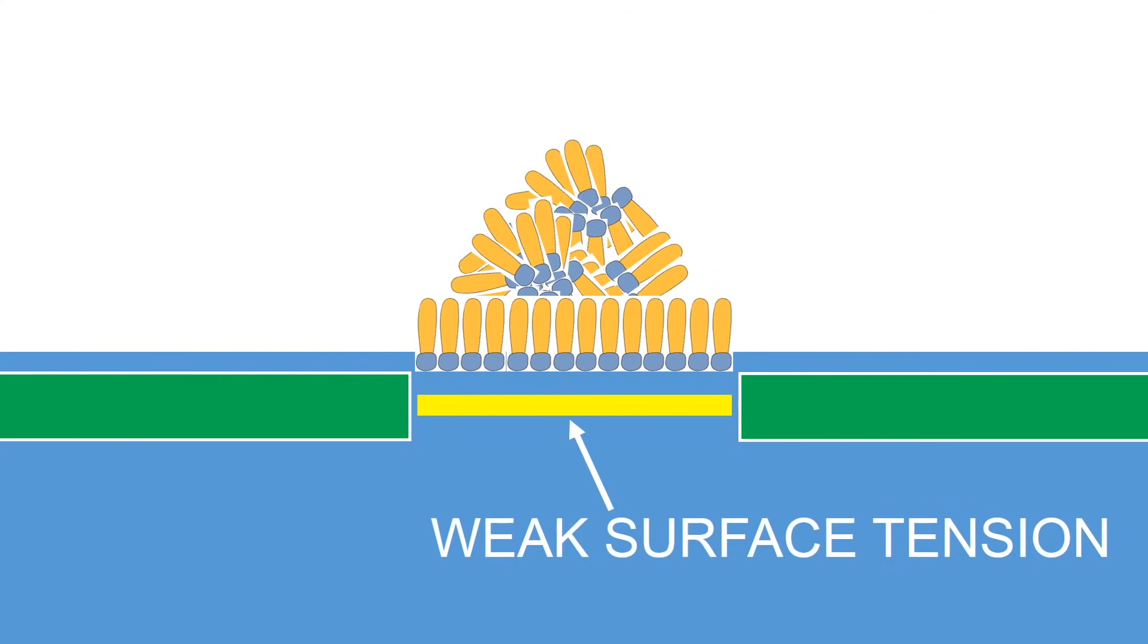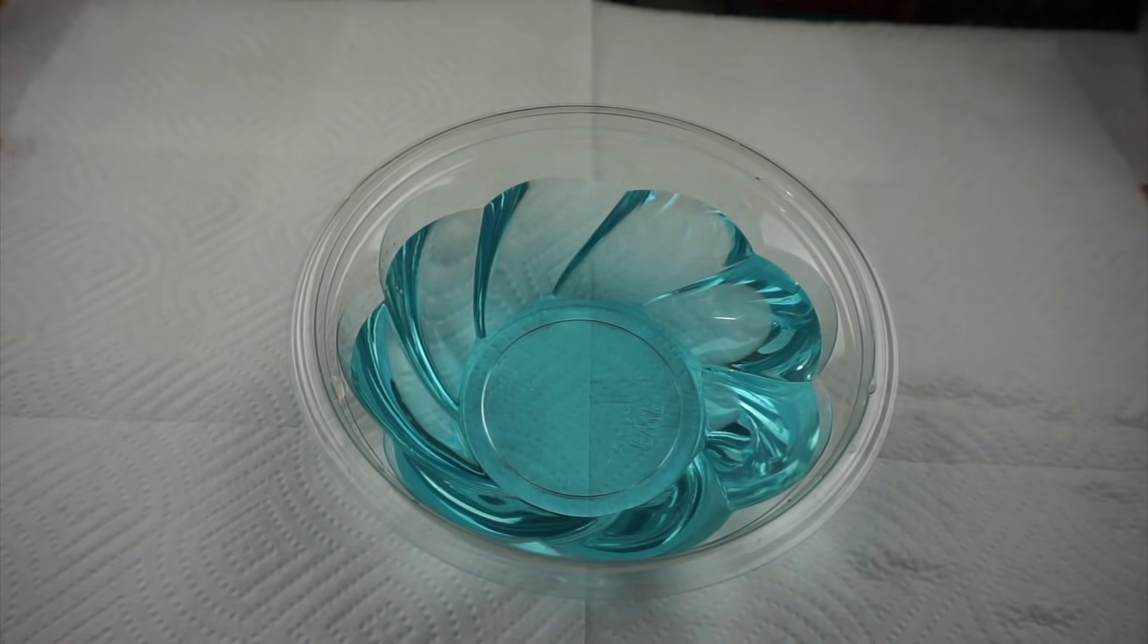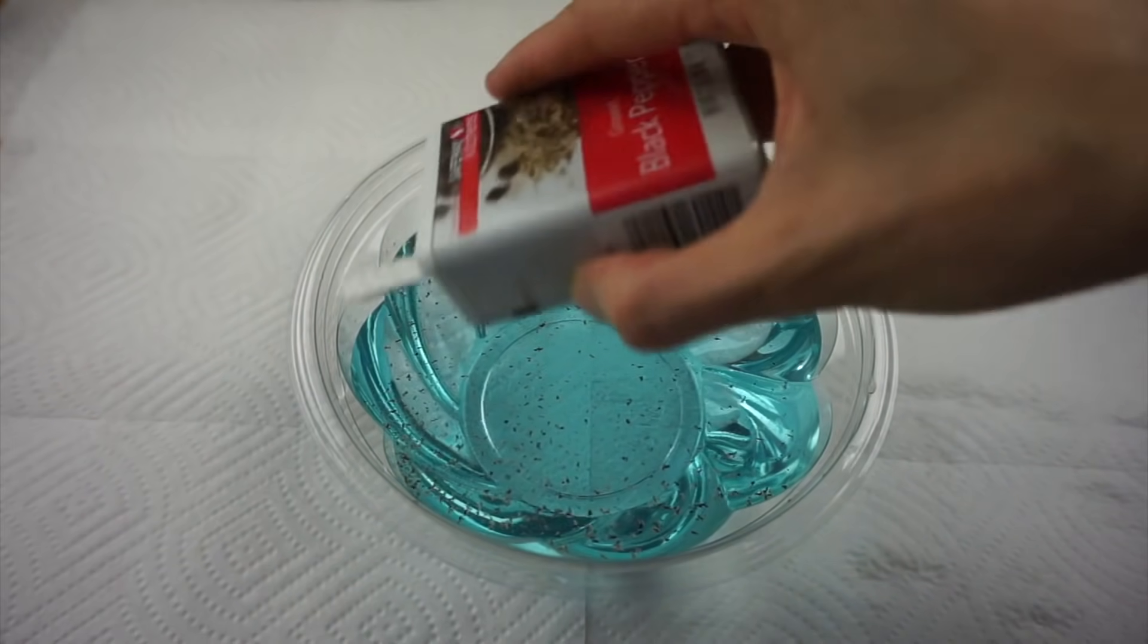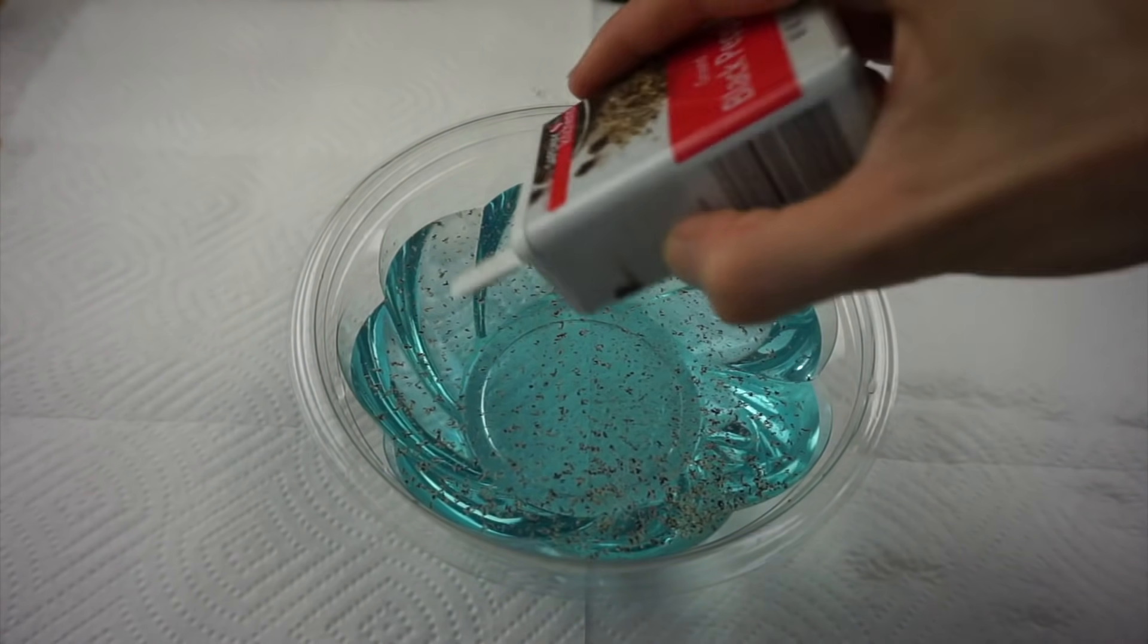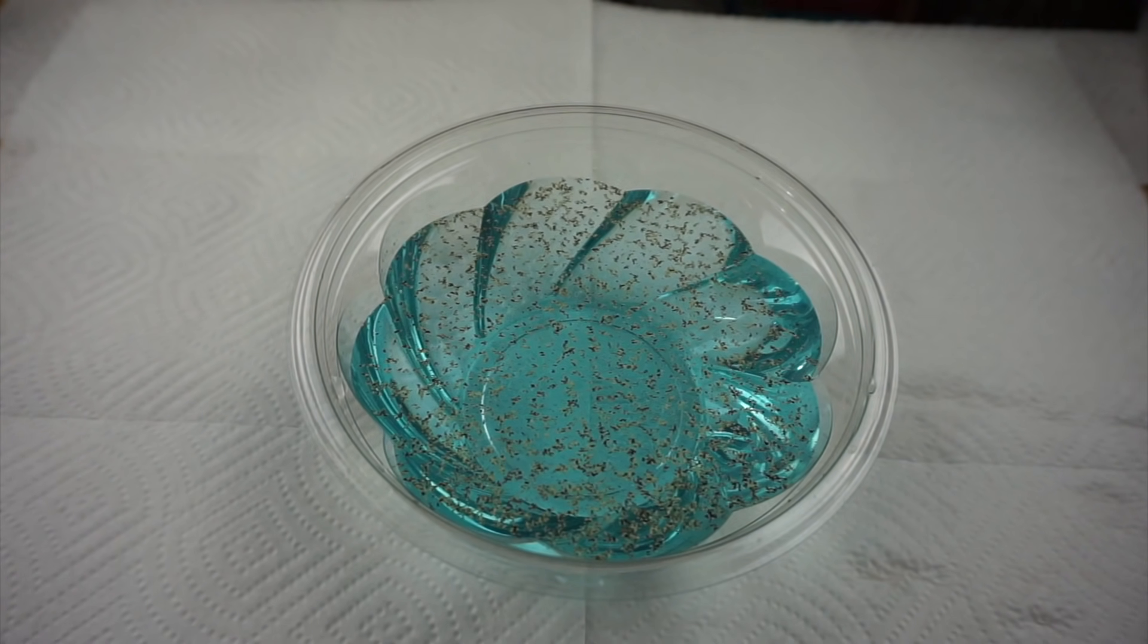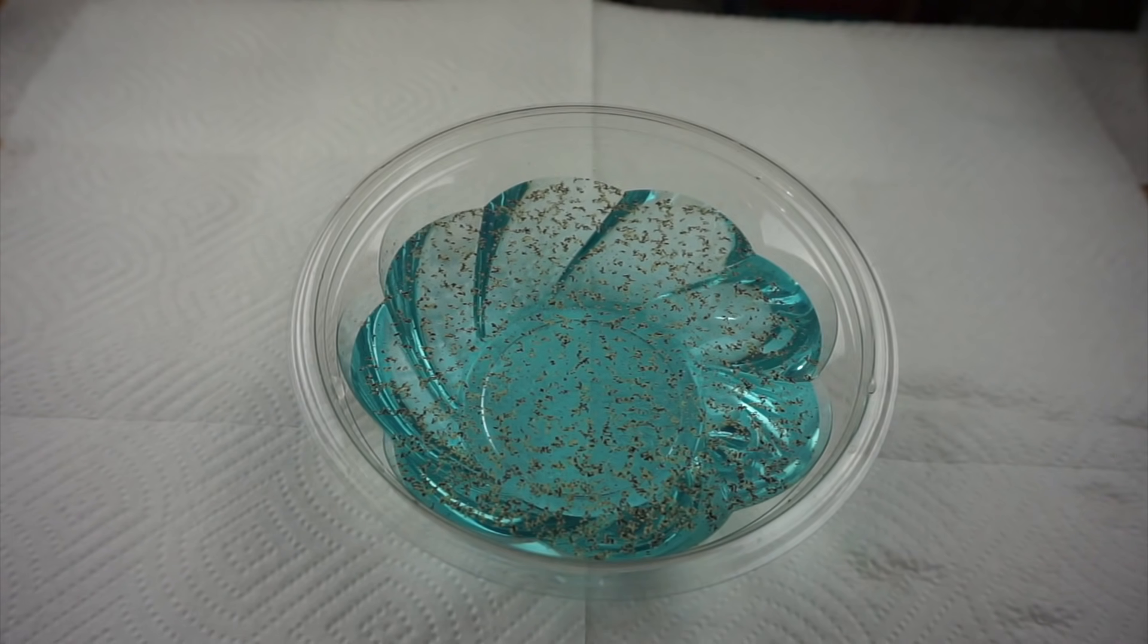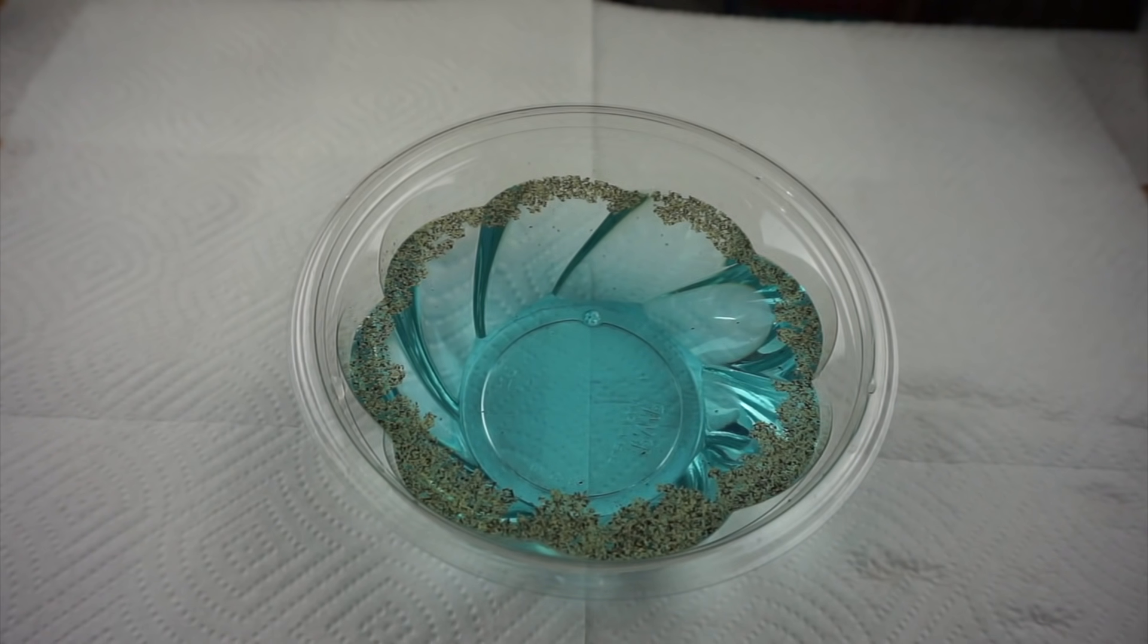Are you ready to see this in action? We're going to do four fun investigations. Our first one is called pepper scatter. I colored this water blue for better visibility, but that is completely optional. The water does not need to be blue. After covering the surface with an even layer of pepper, I put a little bit of soap on my finger. When I touch it to the middle of the water, the surface tension is disrupted and all of the pepper scatters to the edges. You don't have to use pepper for this investigation.